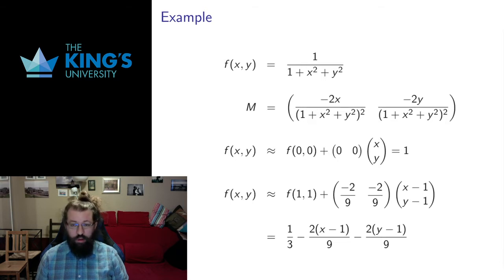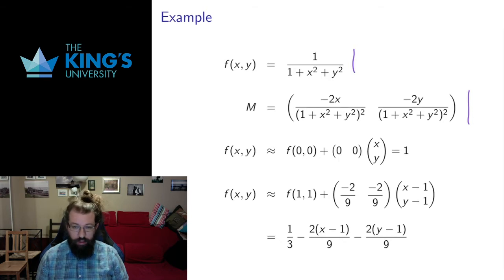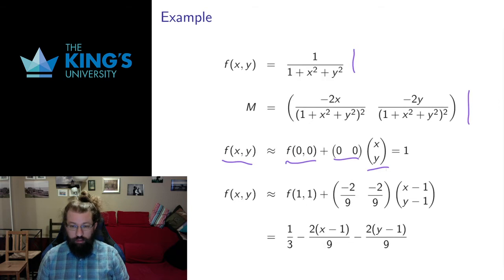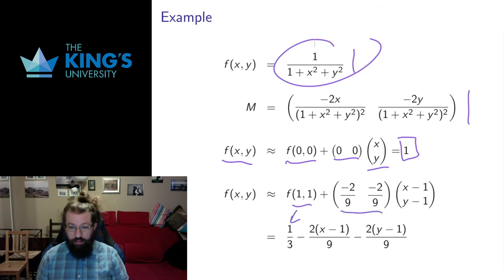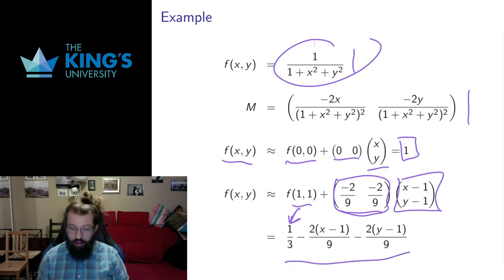I'm going to use the same examples from video three where we discussed the equation of tangent planes. Here's the same scalar field with its partial derivatives calculated in video three. Evaluating at (0, 0): the function at the origin is approximately equal to its value at the origin, which was 1, and both partial derivatives evaluated to 0. So the function is approximately the constant 1 — that makes sense because that was the top of the hill with a horizontal tangent plane. At (1, 1), the value was 3 and the partial derivatives evaluated to negative 2 ninths, giving a result that looks very much like the equation of the tangent plane from video three.